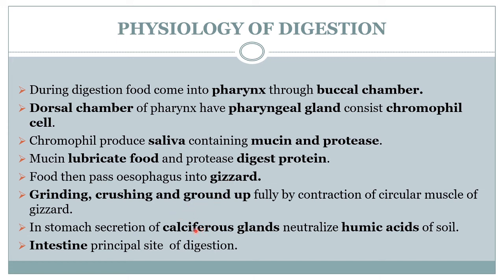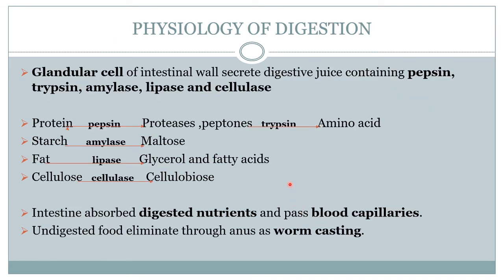In the stomach, the calciferous glands neutralize the humic acid present in the food. Then the food comes into the intestine, which is the principal site of digestion. Most of the digestion and absorption takes place in the intestine. The glandular cells of the intestine secrete many digestive juices like pepsin, trypsin, amylase, lipase, and cellulase.